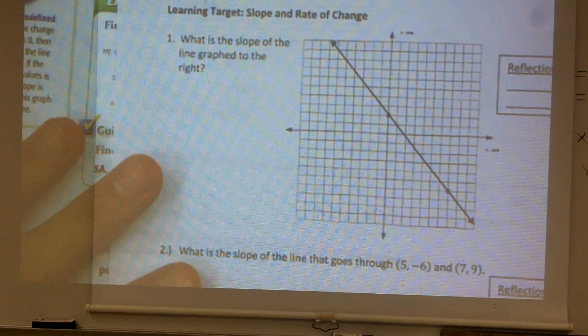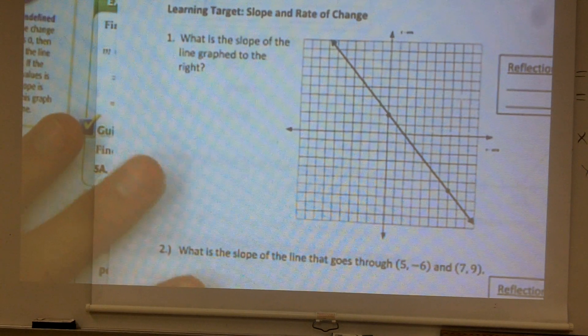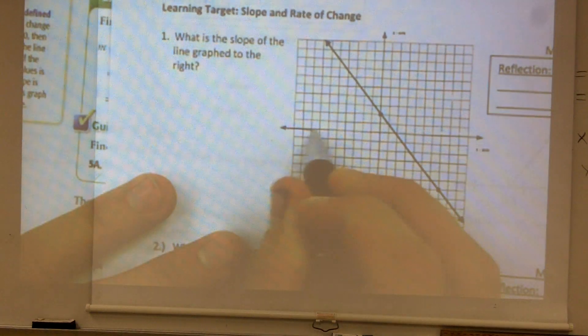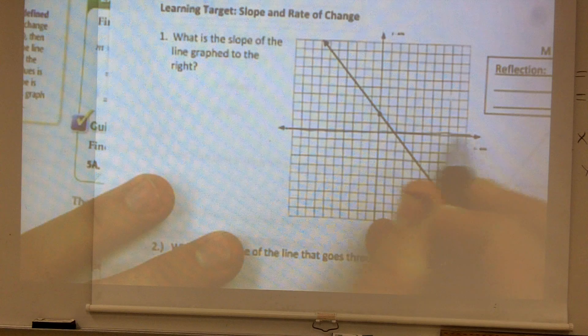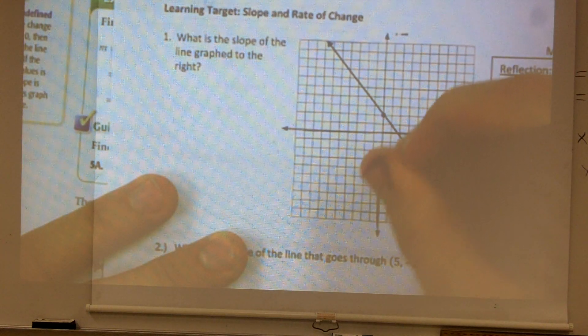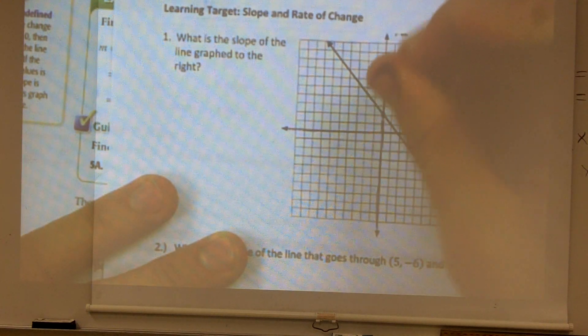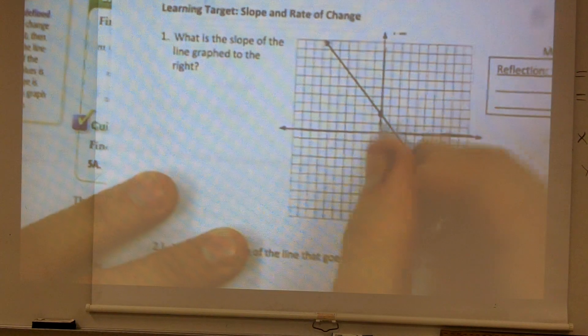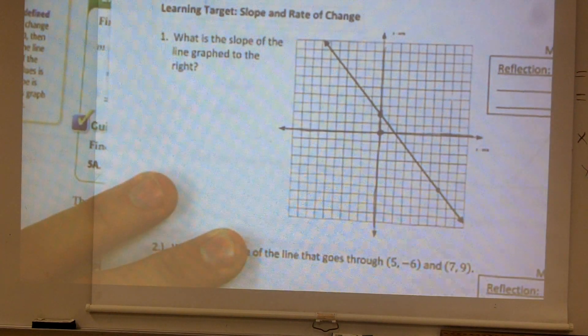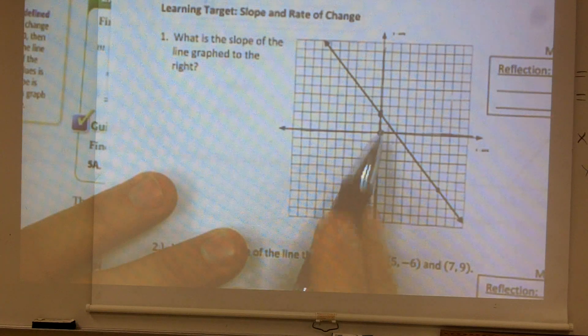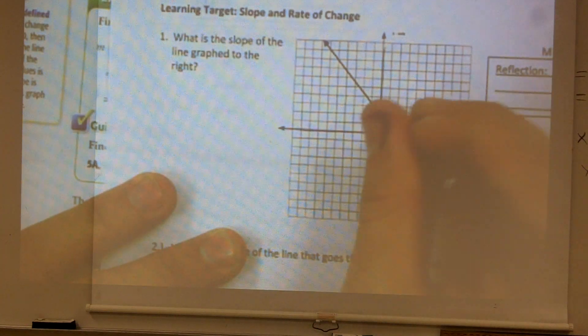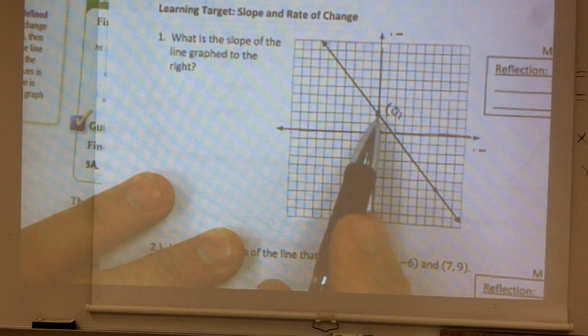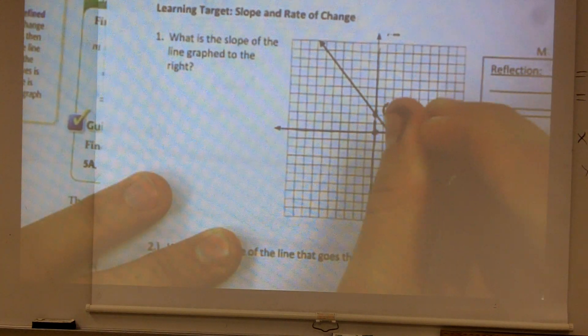First we need to determine what are our coordinate points. So here is our x-axis, and here is our y-axis. We have a point right here. So we need to determine from my origin, 0, 0, what do I have to do to get to this point? Well, I don't have to move left or right, so my x value is 0. However, I do have to go up two units, so it's 0, 2.